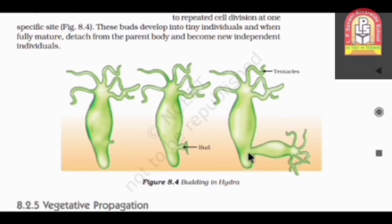And that's why, as a result, there will be two Hydra will form from the one. This parent will remain as it is, but they will give birth to a new offspring.